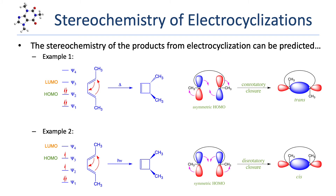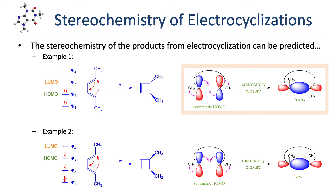The product's stereochemistry can be determined by analyzing the symmetry-allowed mode of ring closure. The reactant is a conjugated diene with 4 pi electrons and 4 pi molecular orbitals. Under thermal conditions, the molecule is in the ground state, meaning psi-1 and psi-2 are both filled, making psi-2 the HOMO. Psi-2 is an even-numbered pi molecular orbital, which means it's asymmetric, and electrocyclization with an asymmetric HOMO requires conrotatory ring closure. In a simplified molecular orbital depiction, the methyl groups point outward. When the two ends rotate 90 degrees in the same direction, the two methyl groups end up on opposite faces of the newly formed ring, giving a trans-stereochemical relationship.